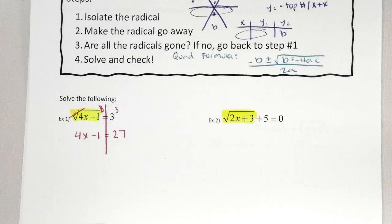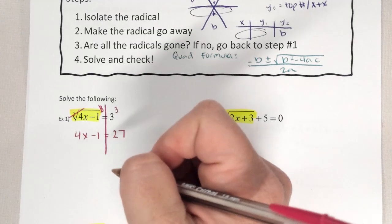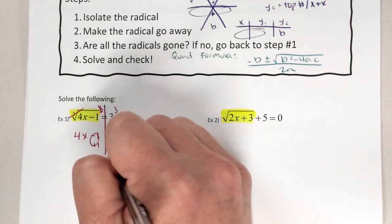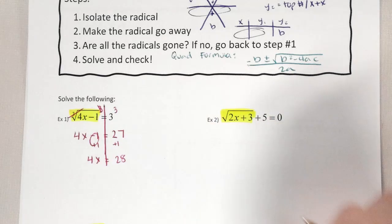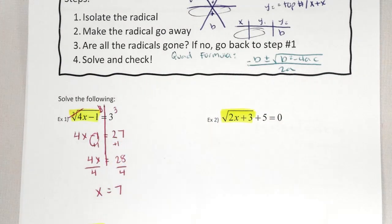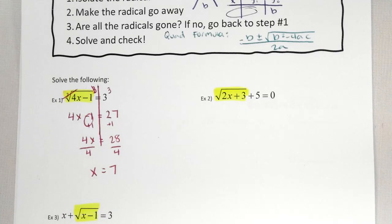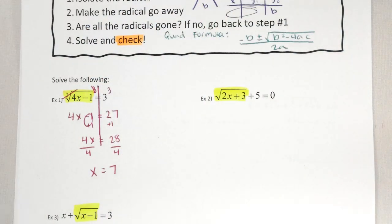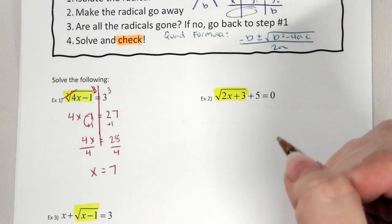Step 3: are the radicals gone? Yes, so we get to move on. Step 4 says solve and check. Plus 1 on both sides leaves me 4x equals 28, divide by 4, and I get x equals 7. Check is a super important step here because you can get solutions that don't work — we call those extraneous solutions.